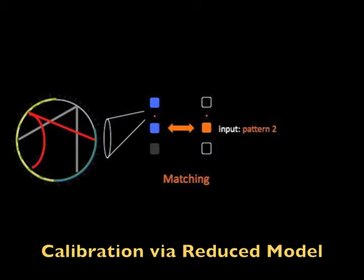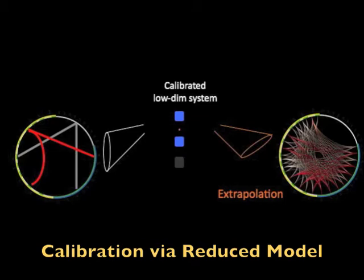The last step is to extrapolate the calibrated reduced system to a suggested wiring for the lateral inhibition in the antenna lobe.